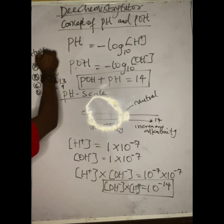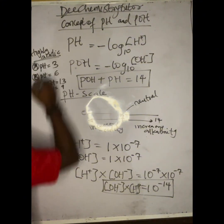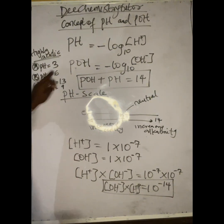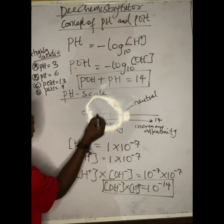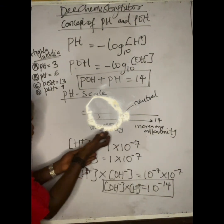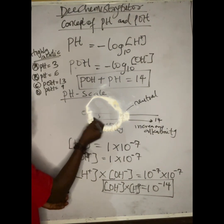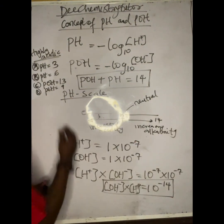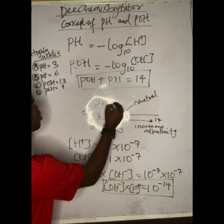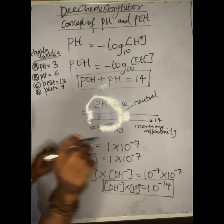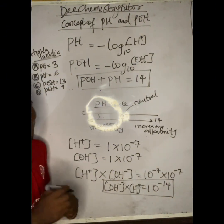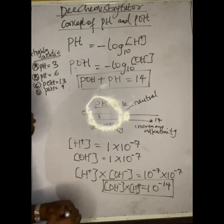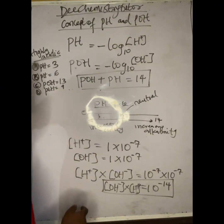Which one is highly acidic? Most people, looking at the pH scale from zero to seven, would choose option A because pH 3 is closer to zero and therefore more acidic. Drop your answer in the comment section — I want to see what you'll pick.